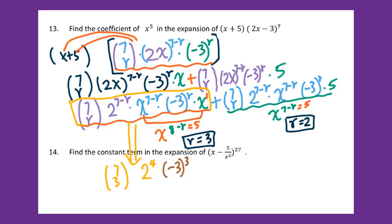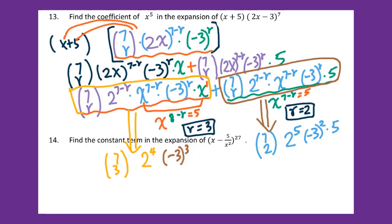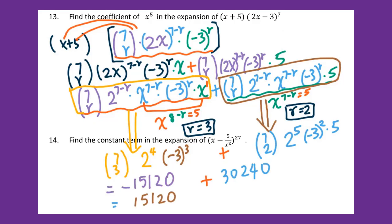For the second part, we plug in r equals 2. We get 7 taken 2, times 2 to the 5th power, times negative 3 squared, times 5. We add these two results together. Putting everything into the calculator: the first term gives negative 15,120, and the second term gives 30,240. Adding these together gives the final answer.